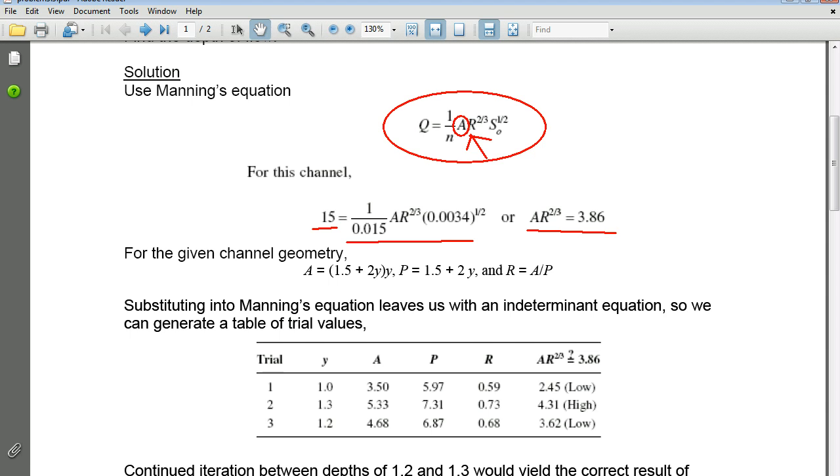Looking at the geometry of the cross-section, the cross-sectional area is this, the wetted perimeter is this, and the hydraulic radius is the cross-sectional area divided by the wetted perimeter. So how would I go ahead and figure out what the depth is using this governing equation of A times R to the two-thirds equals 3.86? Well, because it has nested parameters, because it is indeterminate, we have to run this thing out using a trial and error method.